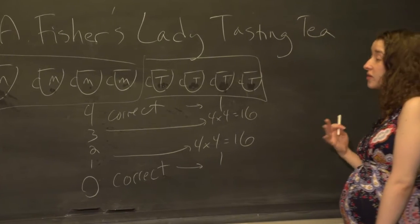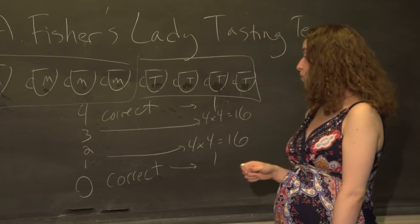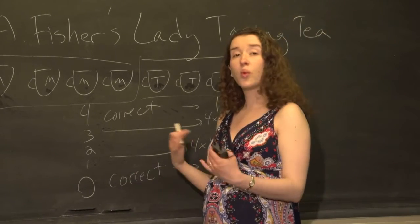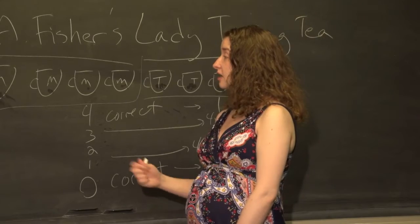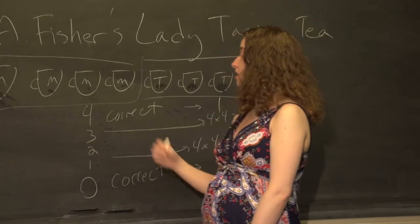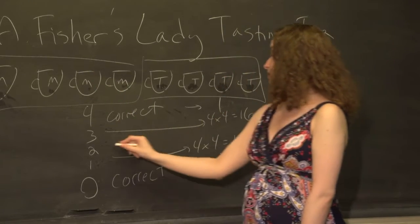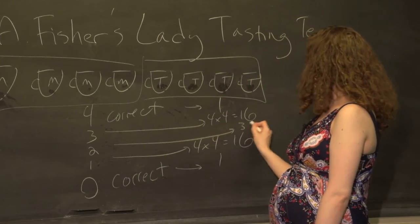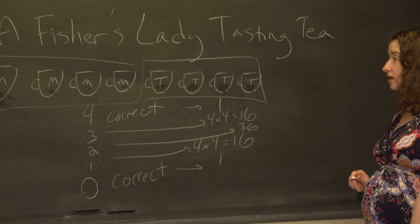We can go through the same types of calculations to figure out how many sets of cups include two milk cups and two tea cups. If we did that calculation, the number we'd get would be 36.